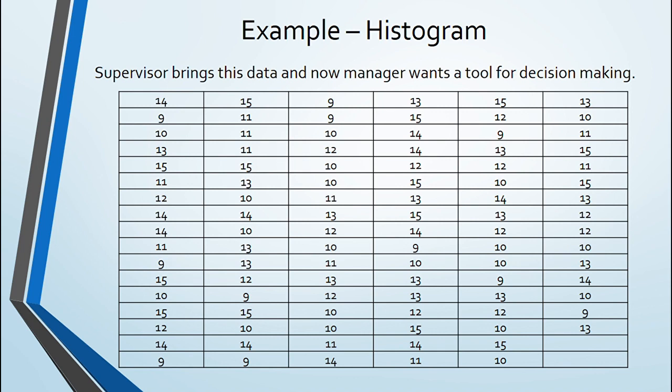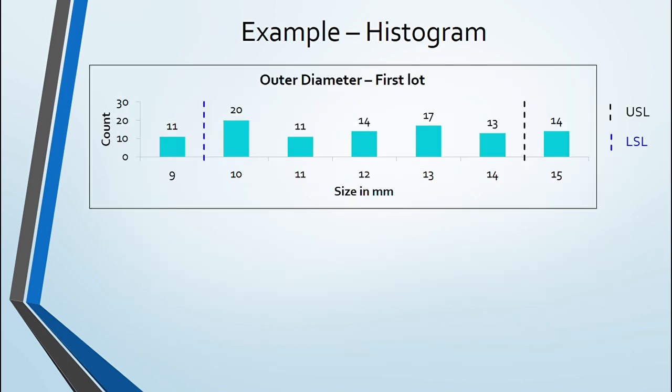He decided bin of 1 mm and formed histogram. He see that there is huge rejection percentage and distribution is not focused on mean.